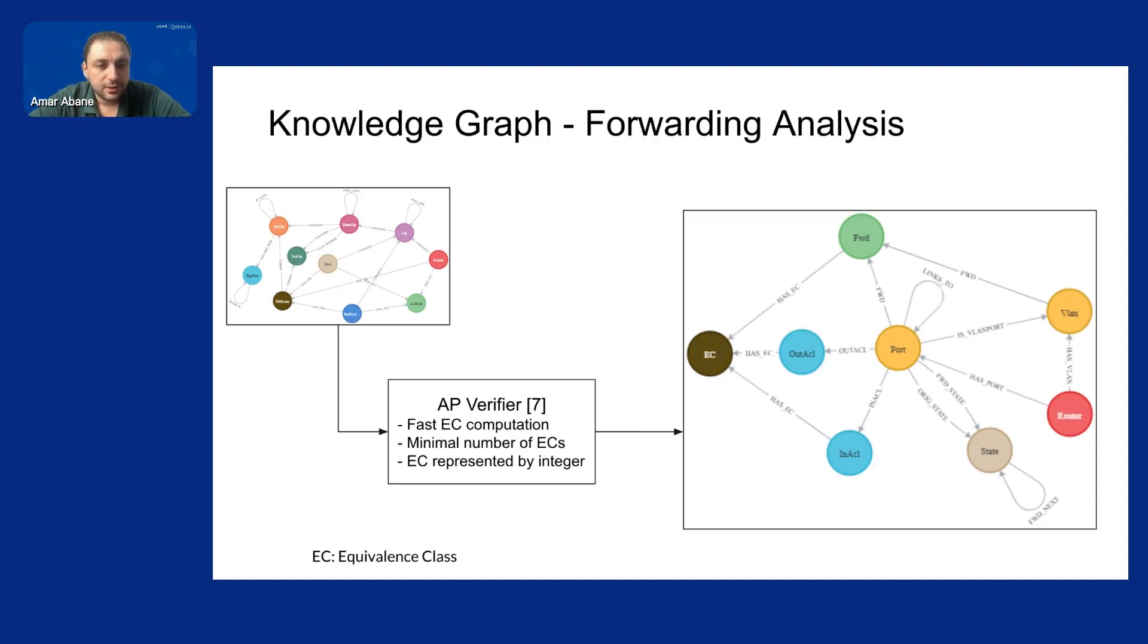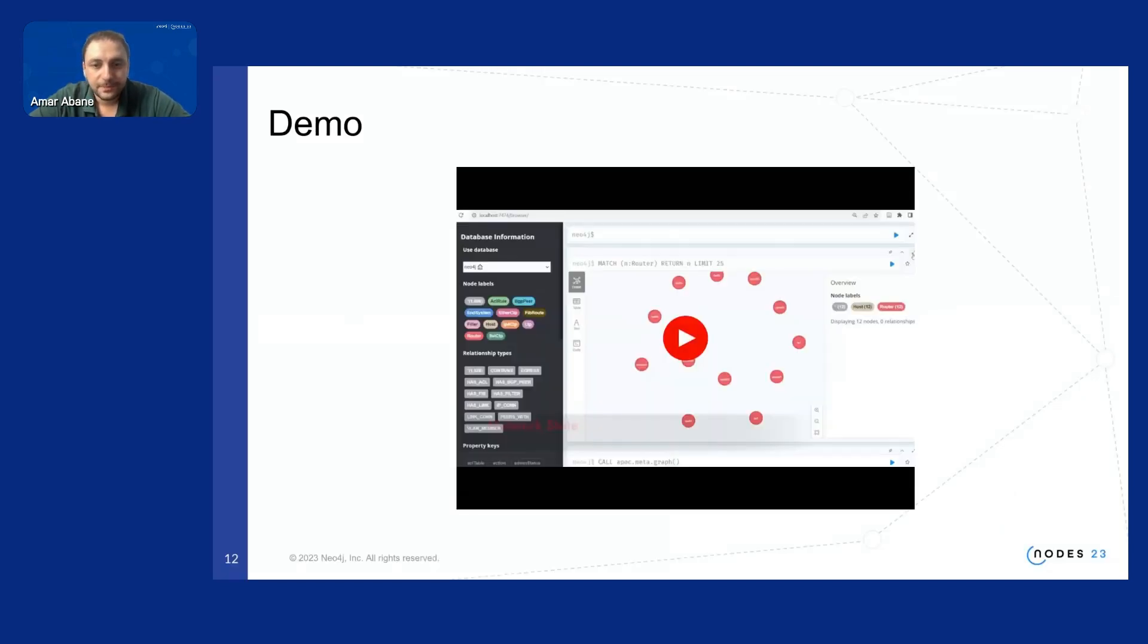So for the forwarding analysis we adapted the AP Verifier which has a fast equivalence class computation and minimum number of equivalence classes and then once they are computed we insert them into the graph which binds every port with the traffic that can be forwarded to that port and also the traffic that is filtered inbound and outbound and then we compute the reachability trees for every port which represents all the possible alternative next hops for every traffic on every active port in the network so it's an exhaustive representation and then we can explore these through Cypher queries.